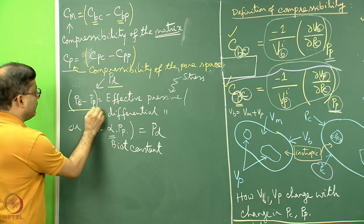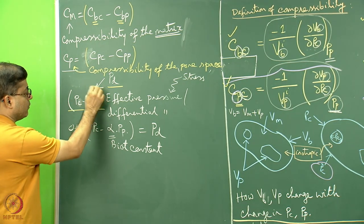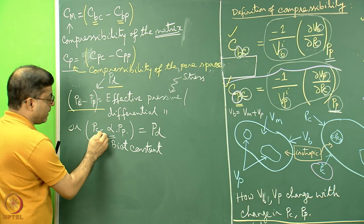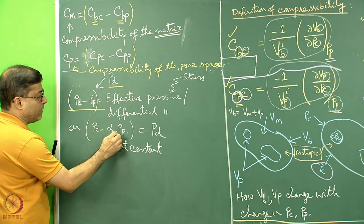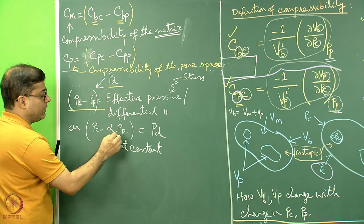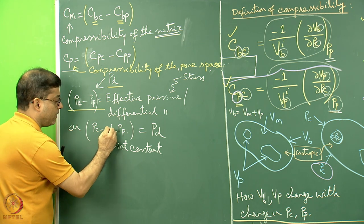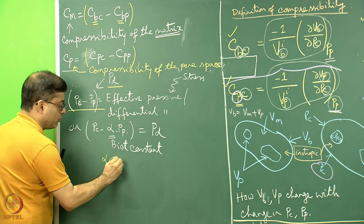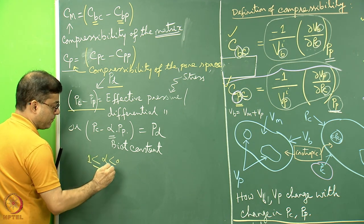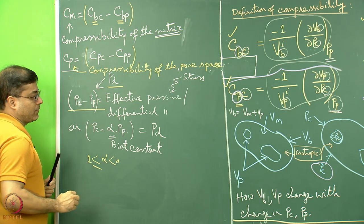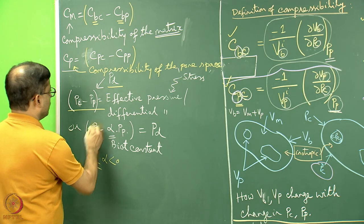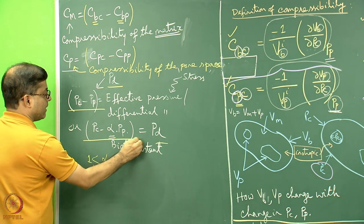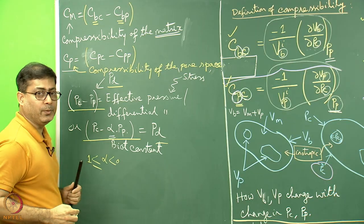Pc minus Pp may not be a good estimate of effective pressure. A better estimation is Pd equals Pc minus alpha times Pp, where alpha varies from 0 to 1. So the effective pressure formula is Pd equals Pc minus alpha Pp.